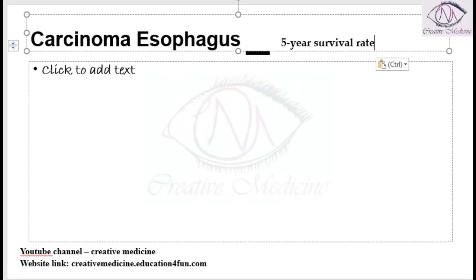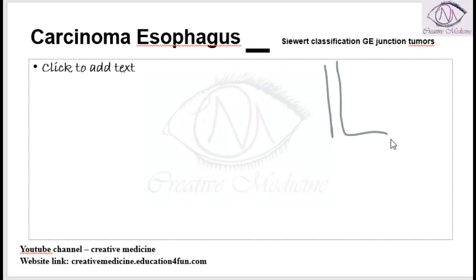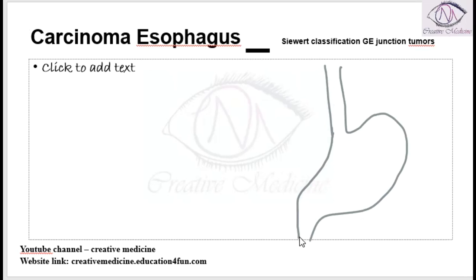For carcinoma esophagus, we have a classification called the C-word classification. Regarding this C-word classification for carcinoma esophagus, we can divide the patients into 3 types: Type 1, Type 2, and Type 3.